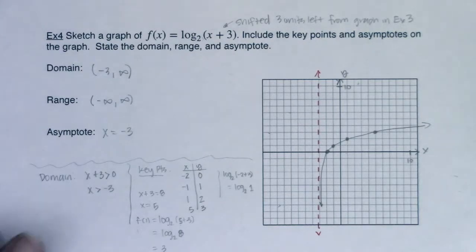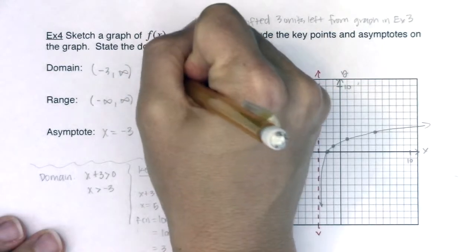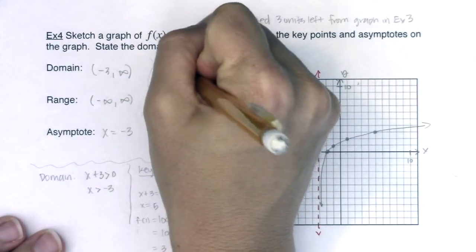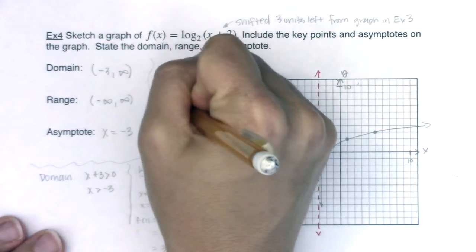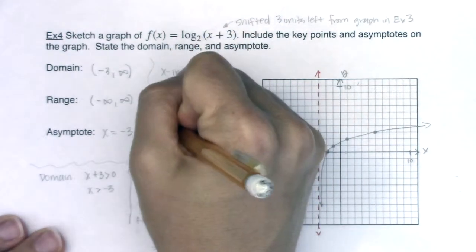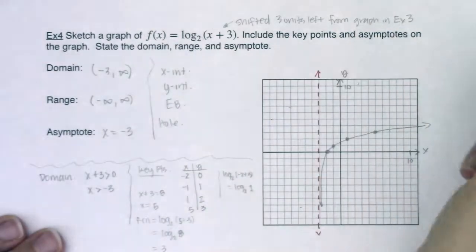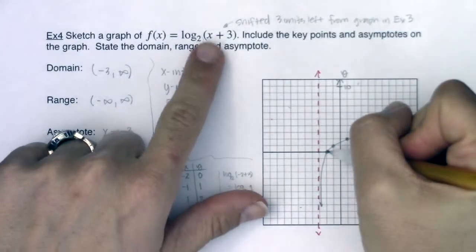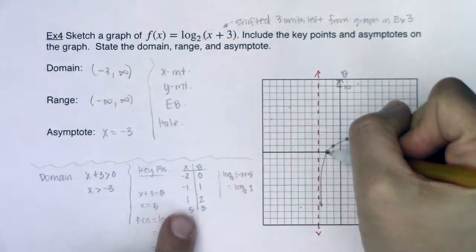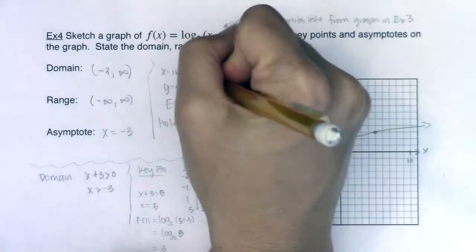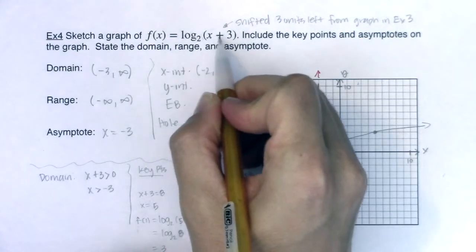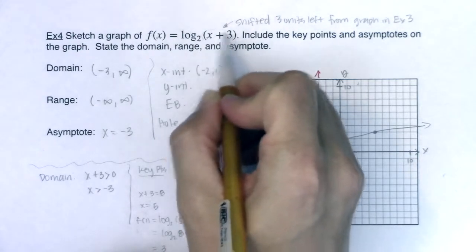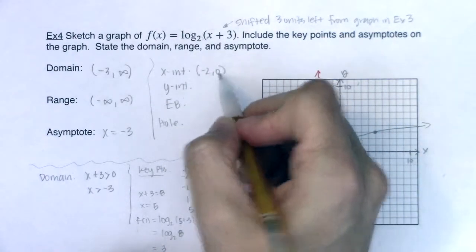Now, just to rattle off a few more traits if we were going to go through them. I do want to talk about what was my x-intercept, what was my y-intercept, what was my end behavior, and did I have a hole? Alright. So for my x-intercept, I can see it right here. It was when my argument was equal to 1. And I can see that's the ordered pair negative 2 comma 0. Because when x is negative 2, negative 2 plus 3 is 1. And any time your argument is 1, the exponent is 0.